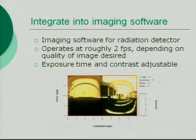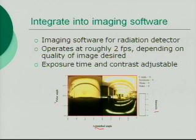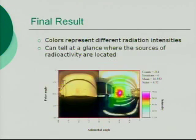Once the data is integrated into the imaging software, it looks something like this — you have the polar angle, the azimuthal angle, and the intensity. This operates at roughly two frames per second, depending on the quality of the image desired. You need just the exposure time and the contrast to get the picture looking the way you want. And this is how it looks with the radiation data projected onto the screen.